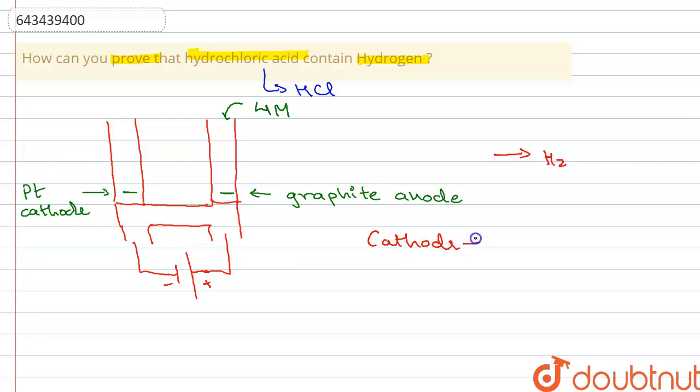So the reaction that takes place at cathode: as I said at cathode reduction takes place, so reduction means the addition of electrons. So here the hydrogen ions will be added to two electrons to give hydrogen gas. So this is the half reaction that takes place at the cathode, the half reduction reaction.